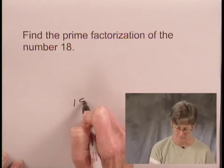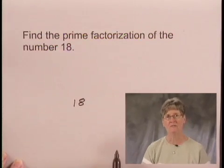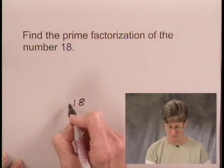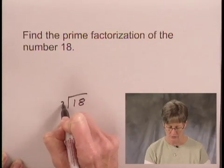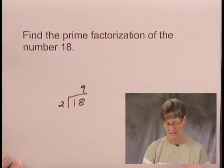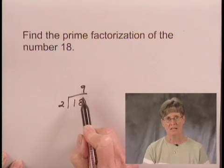18 is divisible by the first prime number, the smallest prime number which is 2. So we'll take 2 into 18 and we get the number 9 for the quotient. 9 is not divisible by 2, so we'll move to the next prime number which is 3.